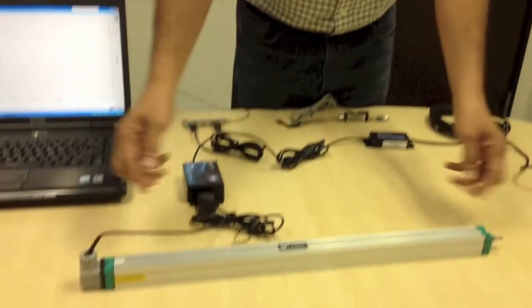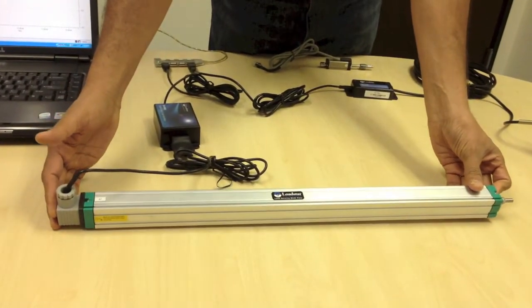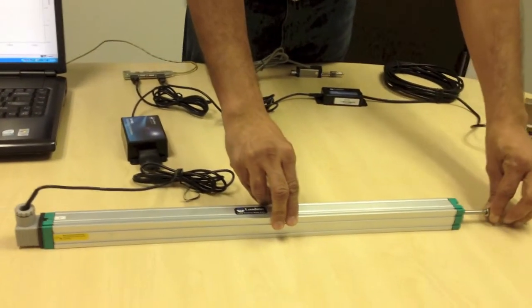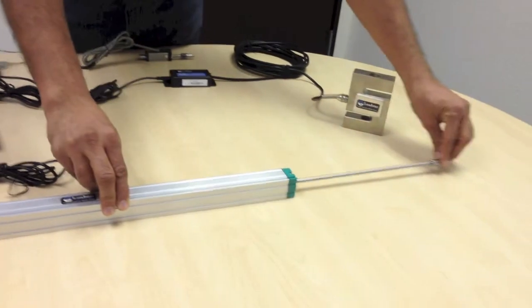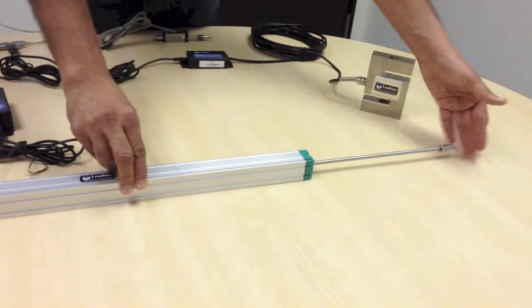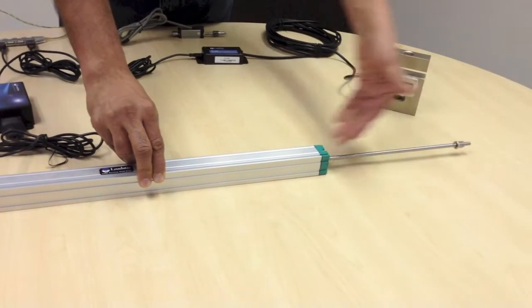Here is a displacement sensor. It's a classic LVDT product. This particular one is a 500 millimeter or 50 centimeter version. And basically it has a rod that comes in and out and depending on how far in or out it is, it will tell you how much displacement is being applied.